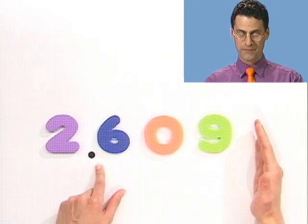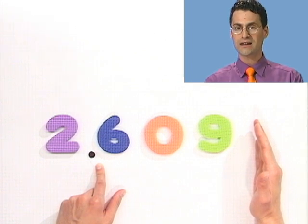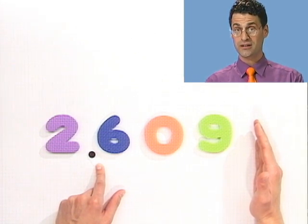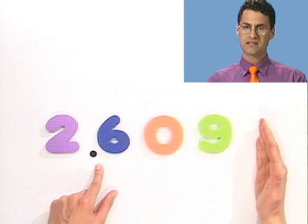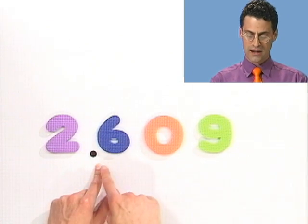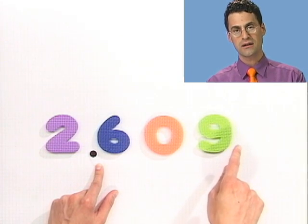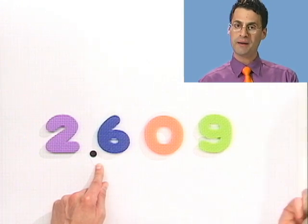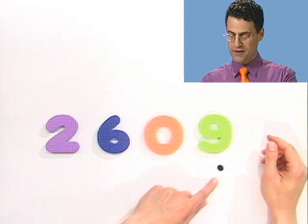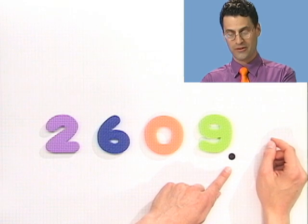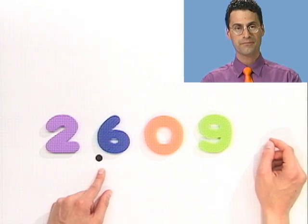Here, that would be 10 times 10 times 10, which is 10 cubed, which is 1000. And so I could actually write this number as 2.609 multiplied by 10 to the third power. The 3 coming from the number of little sound effects I made.